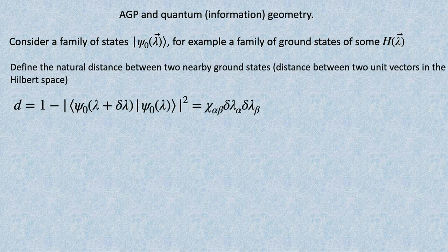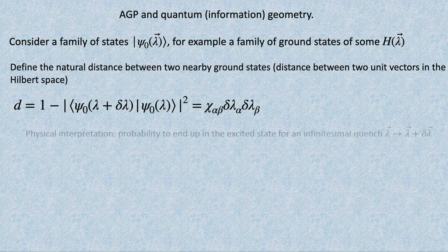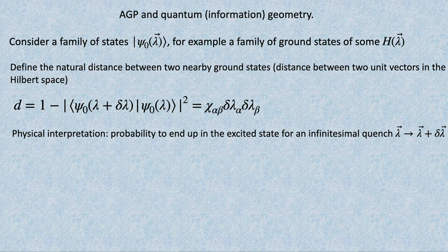I can think about these states as vectors, and there is a natural distance between two vectors. If you think of them as unit vectors in space, and you slightly rotate one, a natural distance choice is one minus the scalar product of the two vectors. If the vectors didn't rotate, this distance is zero. If you rotate a little bit, this distance tells you how much it's rotating.